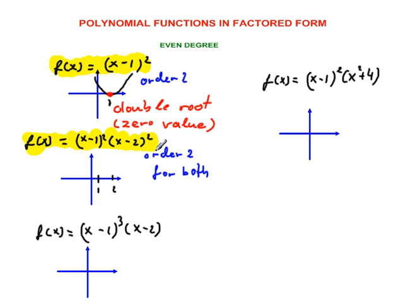Remember, even degree functions always maintain the same sign for negative infinity and positive infinity in terms of x values. So you start from above. In short terms, every even function, obviously with the leading coefficient that is positive, will have its graph in first and second quadrant.